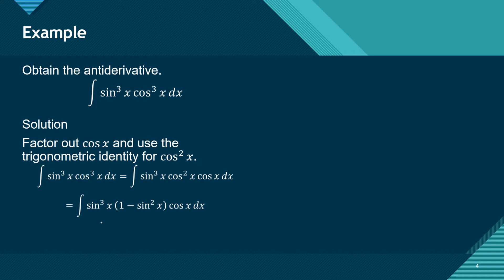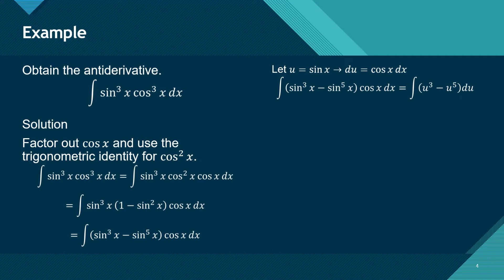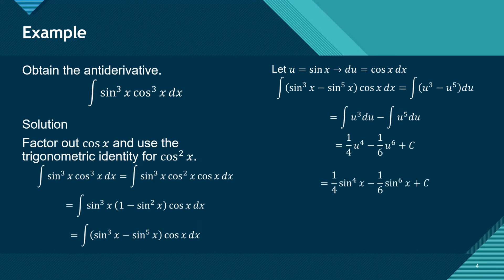We do the multiplication, and this brings us to a new function. You know that the derivative of sine of x is cosine of x, so the technique of substitution will help here. Let u equal sine of x, so du equals cosine of x dx. Our function becomes a polynomial in form and you know how to get the antiderivative using the power rule. The antiderivative is one-fourth times sine of x raised to the fourth minus one-sixth times sine of x raised to the sixth plus C.